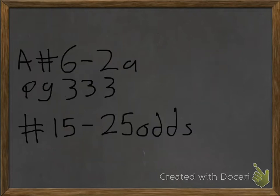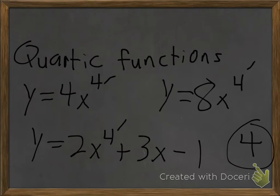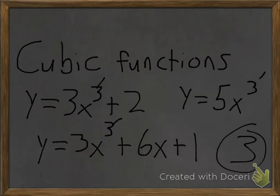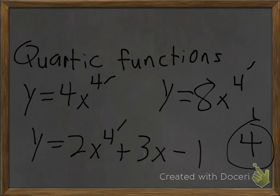To review: when naming polynomial functions, always look at the highest exponent — your degree — in order to name it. A linear function has a degree of 1, a quadratic function has a degree of 2, a cubic function has a degree of 3, and a quartic function has a degree of 4.